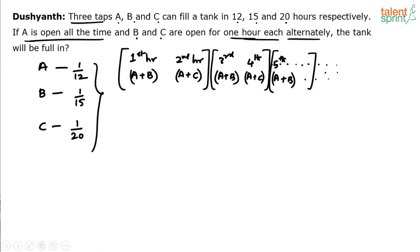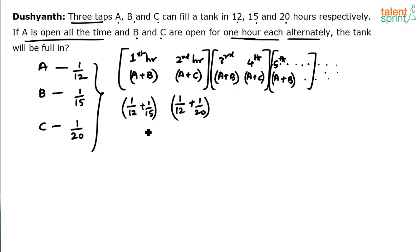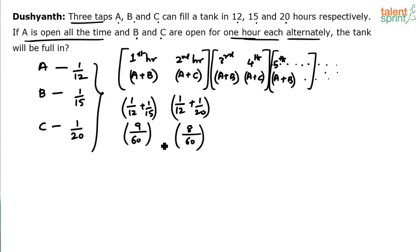In the first hour, A and B work: 1/12 + 1/15. The LCM is 60, giving 5/60 + 4/60 = 9/60. In the second hour, A and C work: 1/12 + 1/20. That gives 5/60 + 3/60 = 8/60. So in the first hour, 9/60 of the work is done, and in the second hour, 8/60.